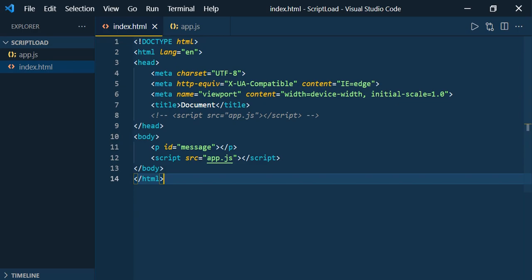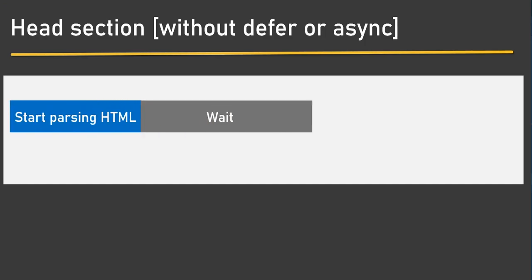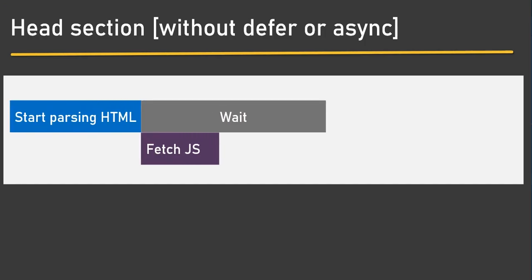Hello again. In the last session we saw how to load external JavaScript inside an HTML page by specifying the script tag and the source of the JavaScript file inside the head section and before the closing of the body section. We know that whenever we mention the script tag, which is responsible for downloading the JavaScript, as soon as the parser finds the script tag it downloads the JavaScript and then executes it.